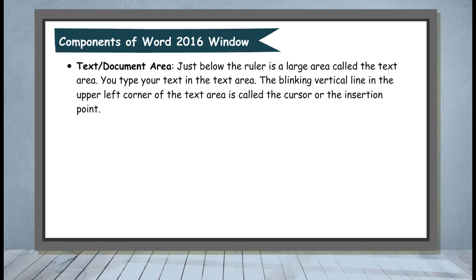Text or Document Area. Just below the ruler is a large area called the text area. You type your text in the text area. The blinking vertical line in the upper left corner of the text area is called the cursor or the insertion point.